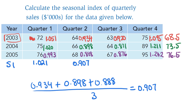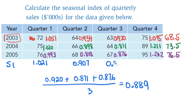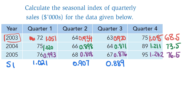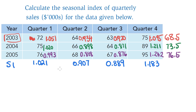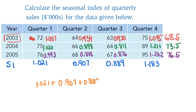That's the seasonal index for quarter two. Quarter three follows the same process, and finally for quarter four we get 1.183. A handy rule: seasonal indices always add up to the number of time periods in a year — four for quarters, twelve for months, seven for days. Let's check: 1.021 plus 0.907 plus 0.889 plus 1.183 adds up to exactly four.